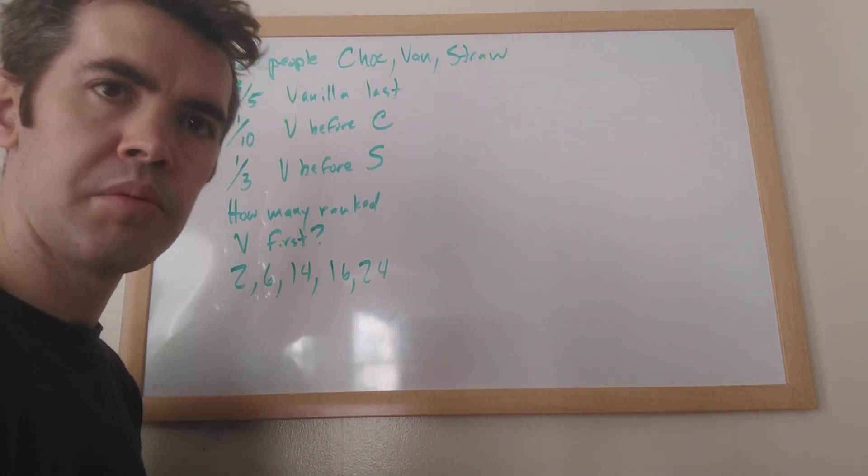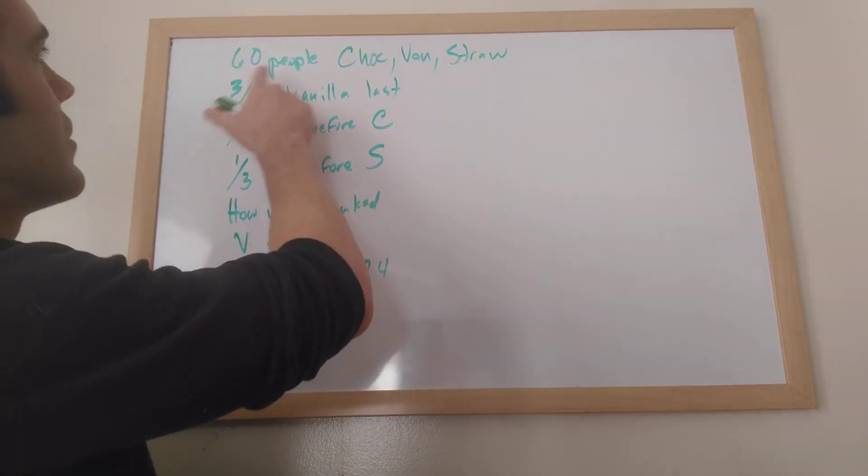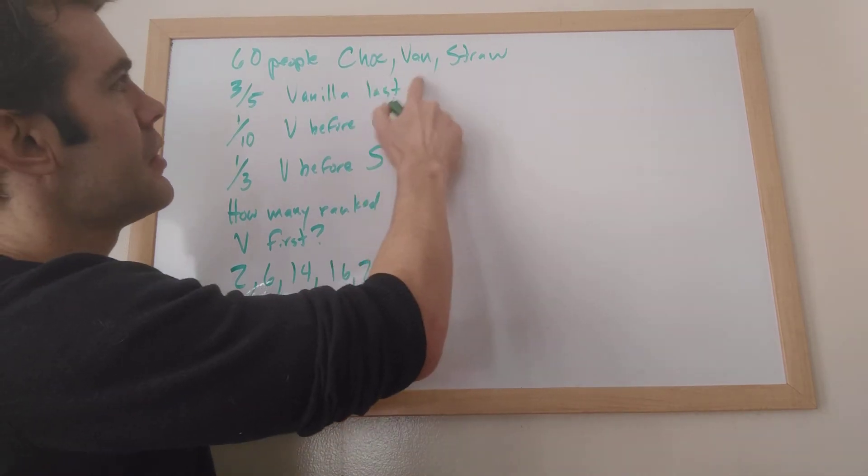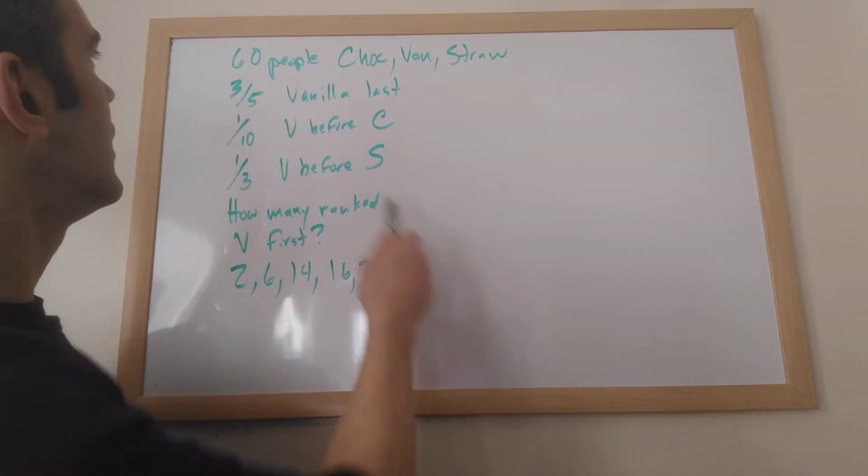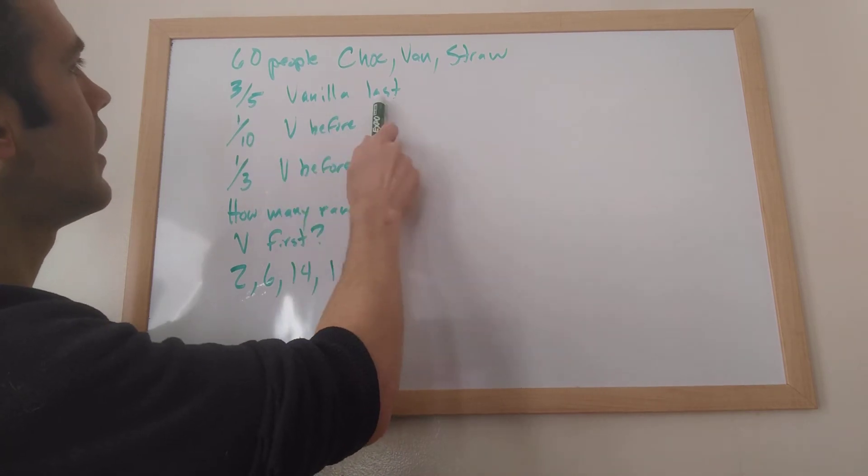Alright, so here we have this problem from the GMAT. We've got 60 people. They all ranked chocolate, vanilla, and strawberry ice cream in terms of preference - first, second, or third.